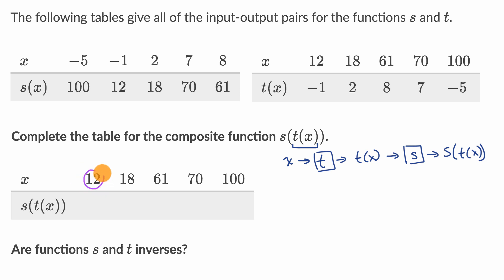When x is equal to 12, we're going to put it into our function t first. So when x is an input into t, the output is equal to negative one. So that's our t of x. And then we're going to take this negative one and input it into s. So negative one here. And when you input that into s, you get as the output, s of negative one is 12. So s of t of x is 12. So interestingly, this is 12.